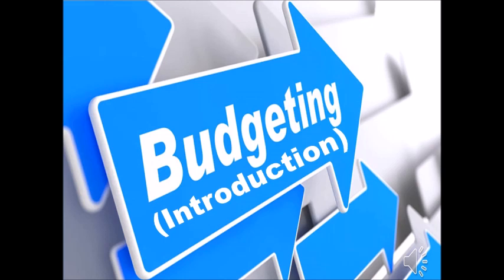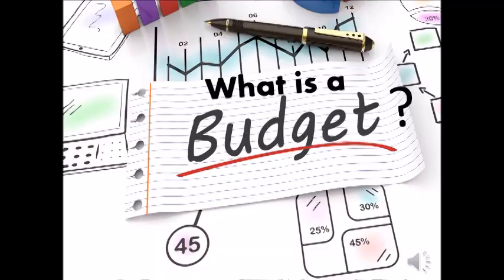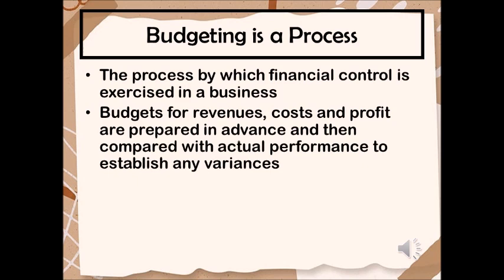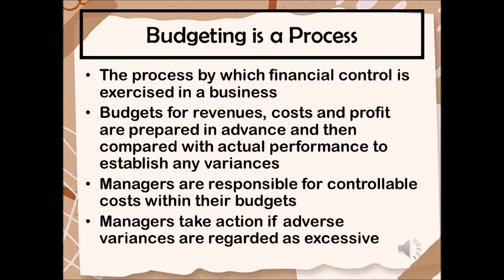Let's move on to the last topic: the introduction of budgeting. A budget is all about looking forward — looking at the future plan for a business as expressed by the revenues, costs, and therefore the profits of a business. So a budget is a financial plan, but it needs to cover all aspects of the operation of the business, not just the finances. Budgeting is a process typically done each year and it's a way in which financial control can be exercised by the management of a business, making it a very important part of management control.